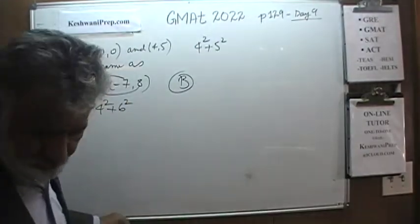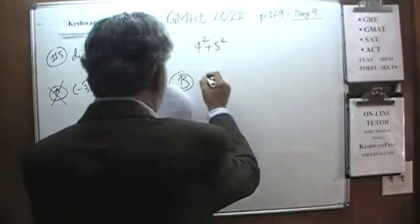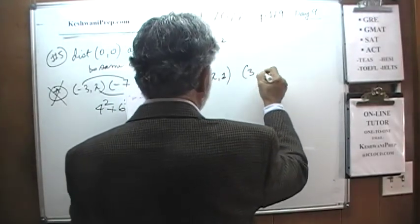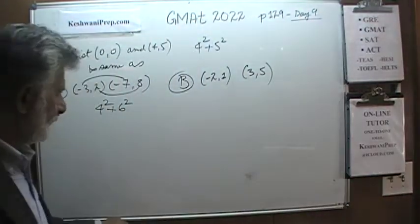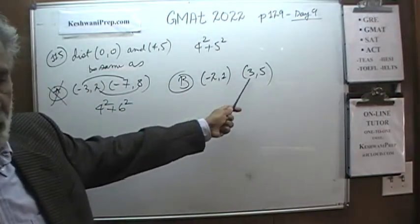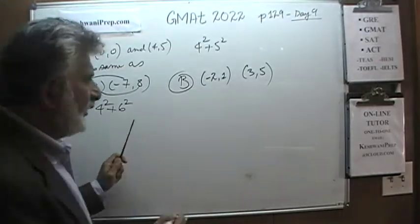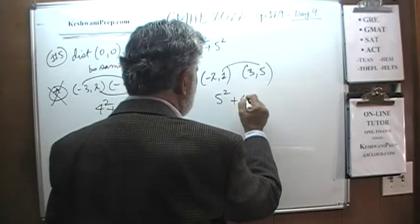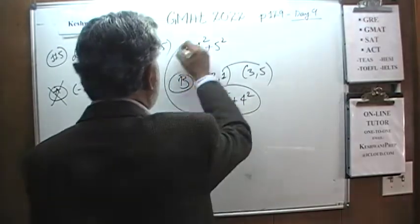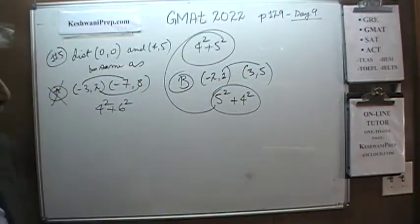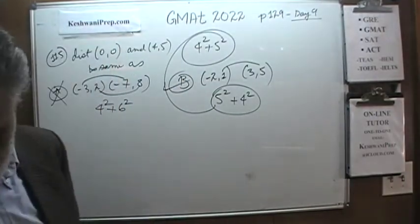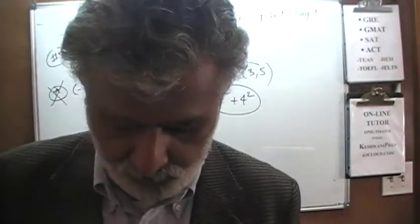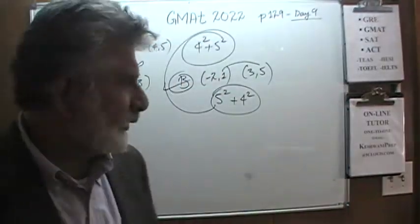Answer choice B says (negative 2, 1) and (3, 5). From negative 2 to 3 is a horizontal distance of 5, and from 1 to 5 is a vertical distance of 4. So the distance squared is 5 squared plus 4 squared, which equals 41 — the same as our target. The answer is B. You can verify C, D, and E yourself; they all give something other than 4 squared plus 5 squared equals 41.